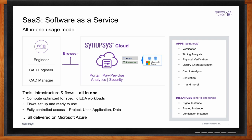Apps versus instances is a new concept introduced for SaaS. It enables customers to deploy simple point tools — like if they want to do verification, timing analysis, or library characterization for a particular job — or they can leverage what we call instances. We have enabled three different types of instances today: digital, analog, and verification instance. These are pre-configured end-to-end flows already set up for customers to start using.